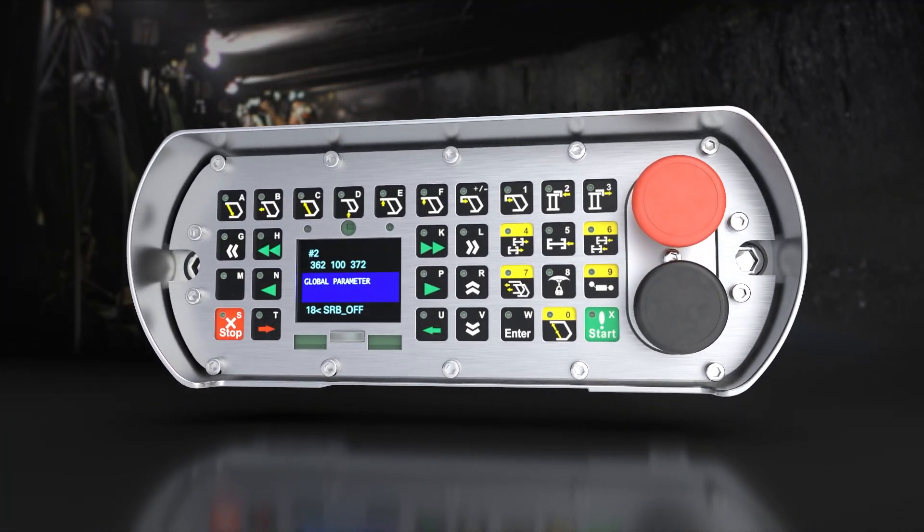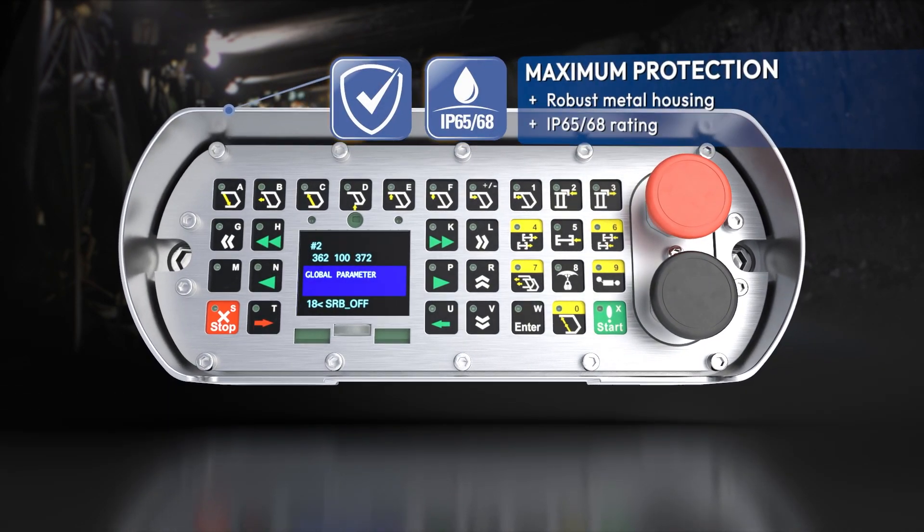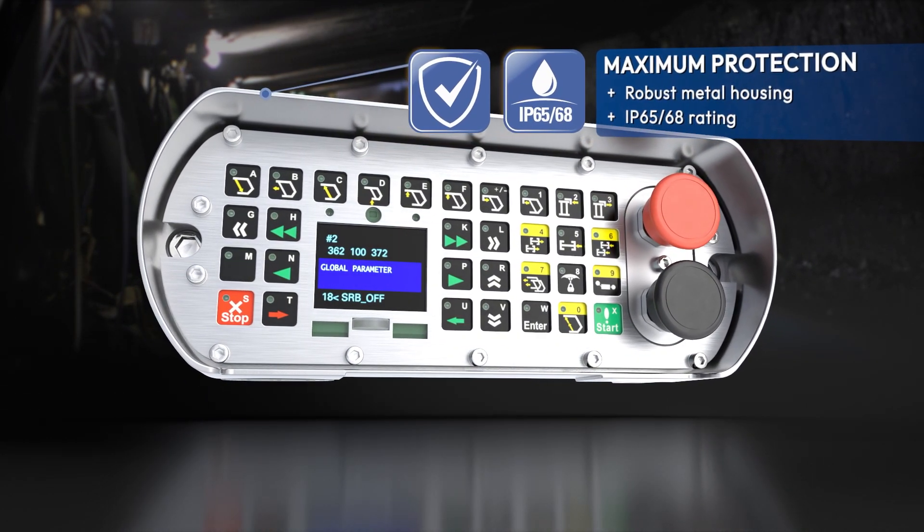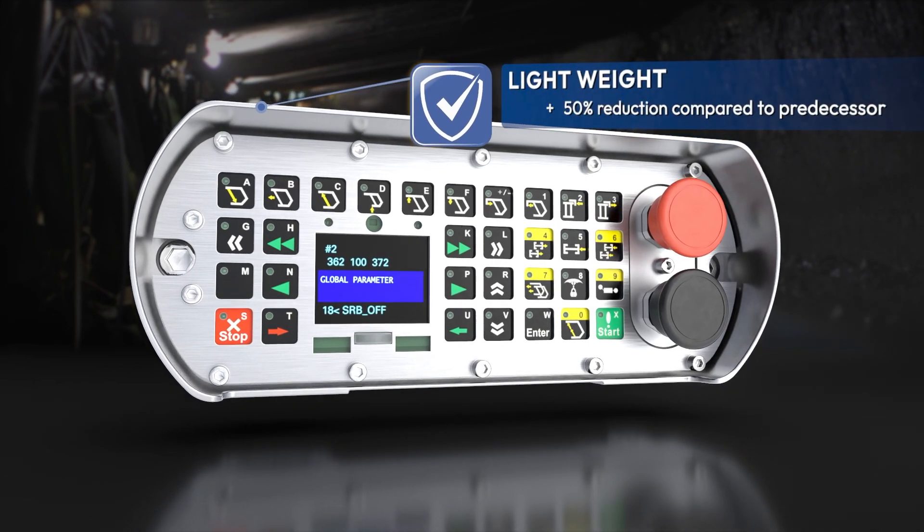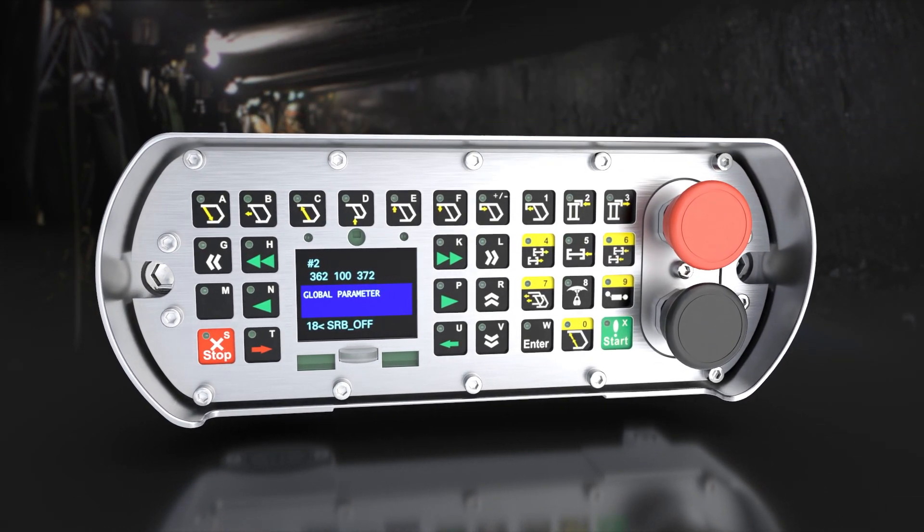The new HBT PMCR 2.0 comes in a robust metal housing, which is IP6568 rated, yet it is 50% lighter than its predecessor.